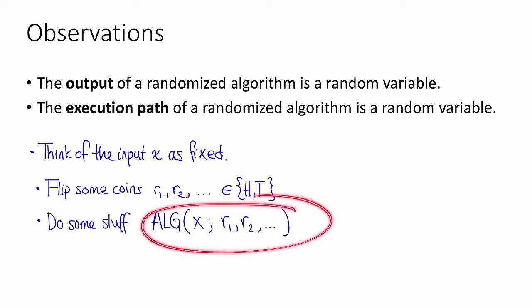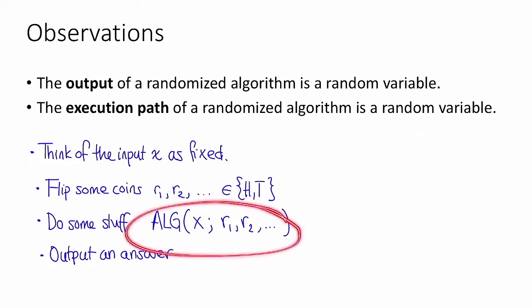Notice that with this way of looking at it, we can imagine that the algorithm flips all of the coins up front, or it can flip them as it goes along. Formally, it doesn't really matter. All we're interested in is this function of the input and our random coins. After our algorithm flips its coins and does some stuff, it's going to output an answer. And formally, that's going to be the output of this function. So what these observations are saying is that both the output of this function and the stuff that it does are random variables, meaning that they are functions of these r_i's and those things are random.